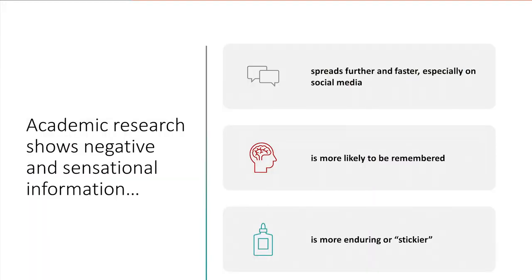An additional point to keep in mind is that academic research finds that sensational and negative information is very impactful. Social media networks magnify the impact of negative information because particular posts can be seen by millions and spark a broader and long-lasting conversation. Negative and sensational information spreads further and faster than other types of information, especially on social networks. It is more likely to be remembered and is more enduring or stickier, which is important especially in instances where a first impression is being made. Within this context, it's clear why analyzing social media can be so important in defamation cases.